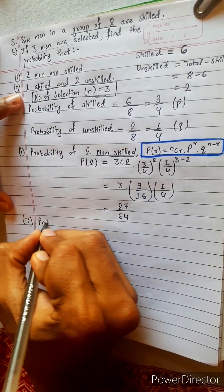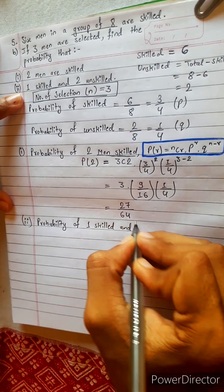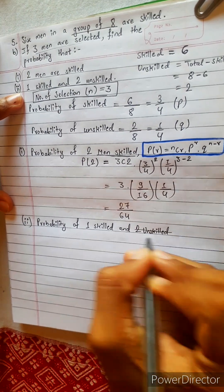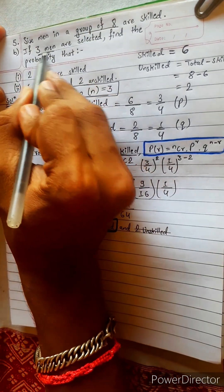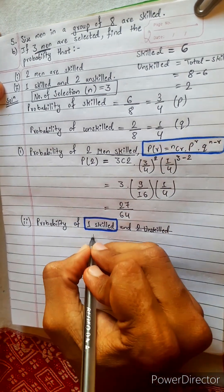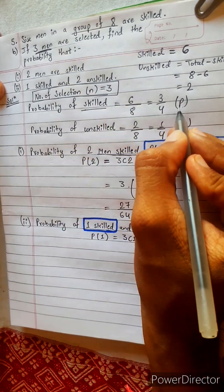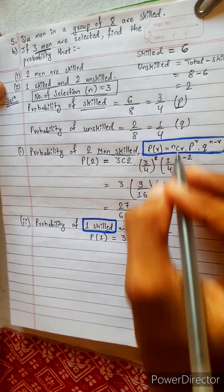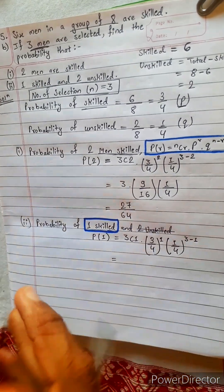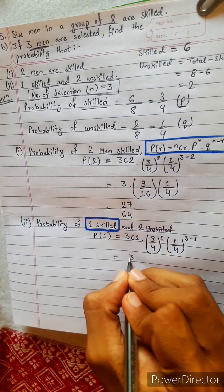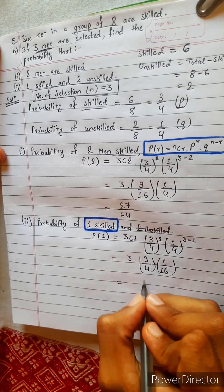Second: one skilled and two unskilled. Probability of one skilled and two unskilled. Focus only on the skill count. If there are total three men and one is skilled, then obviously two are unskilled. So P1 equals three C1 times three by four to the power one — we are supposing skilled as our P — times one by four to the power N minus R, which is three minus one equals two. One by four squared is one by sixteen. Three C1 is three. So three times three by four times one by sixteen: sixteen times four is sixty-four. We get nine by sixty-four.